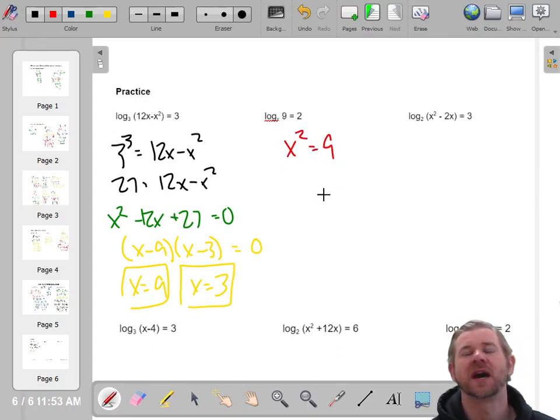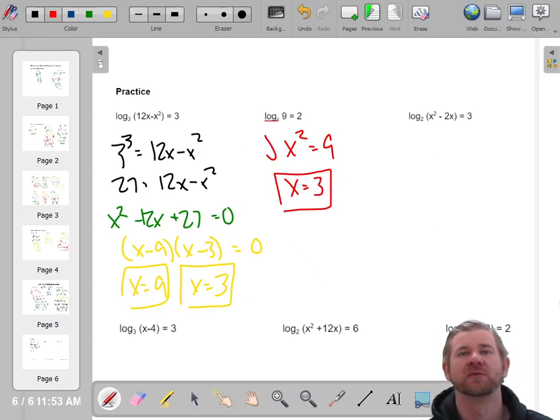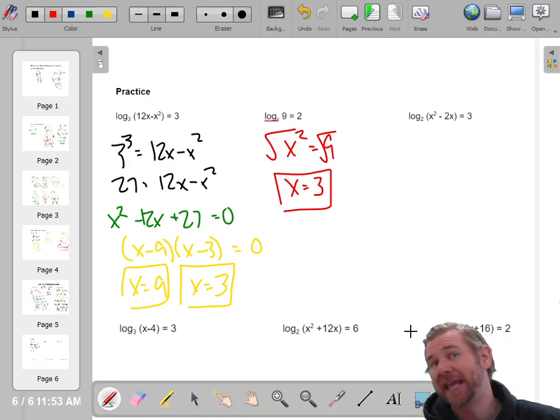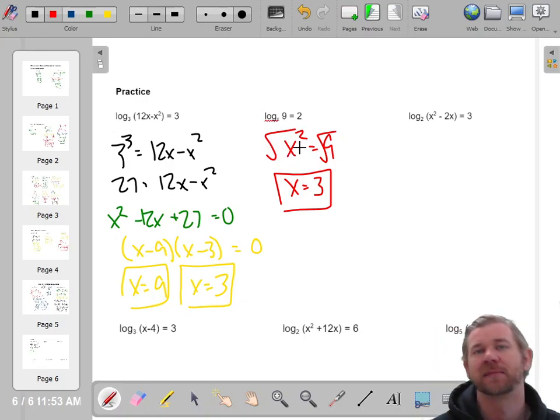x squared is 9. x is 3. You can just square root both sides. Now, it can't be negative 3. Normally, when we square root, we say plus or minus. But it can't be negative 3 because the base of a log cannot be negative.